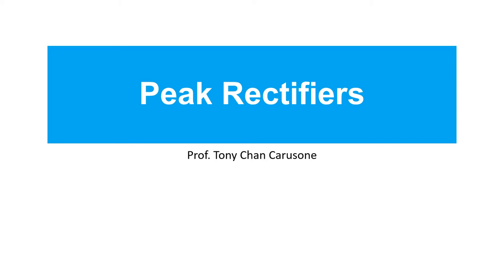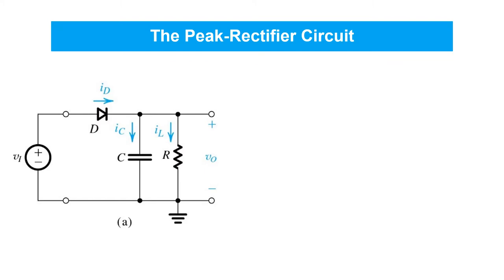In this video, we'll learn about peak rectifier circuits. A simple peak rectifier circuit is shown here. It's simply a half-wave rectifier augmented with the capacitor C. One way to think about the benefit of adding C is that it's simply a filter that smooths out the very ripply waveform at the output of a half-wave rectifier and smooths out the dips that arise between positive half cycles, resulting in a more constant DC output.